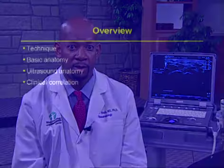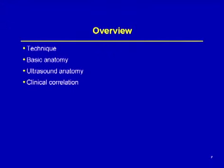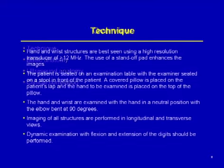In this segment of the series, I will review with you the ultrasound evaluation of the hand and of the wrist. I will talk about the technique for obtaining your images, review some of the basic anatomy, and tell you the standard ultrasound scans for obtaining the images of the hand and the wrist. At the end of this series, I will give you some clinical correlations when looking at hand and wrist pathology.